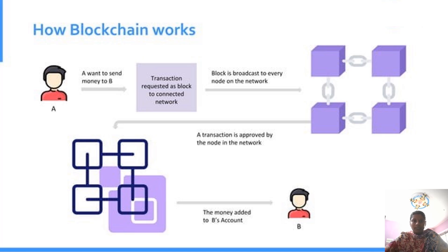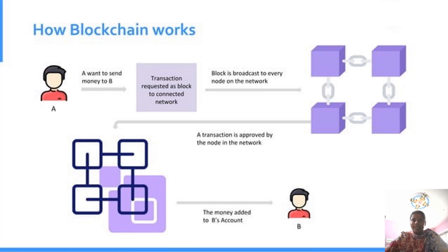Now I am going to explain how the blockchain works. For example, A wants to send money to B. Like these steps the process can be completed: A requests a block to connect in the network, after that they will acknowledge it, then they will broadcast to every node in the network, and after getting approval by all the nodes in the network, the money can be added into B's account.